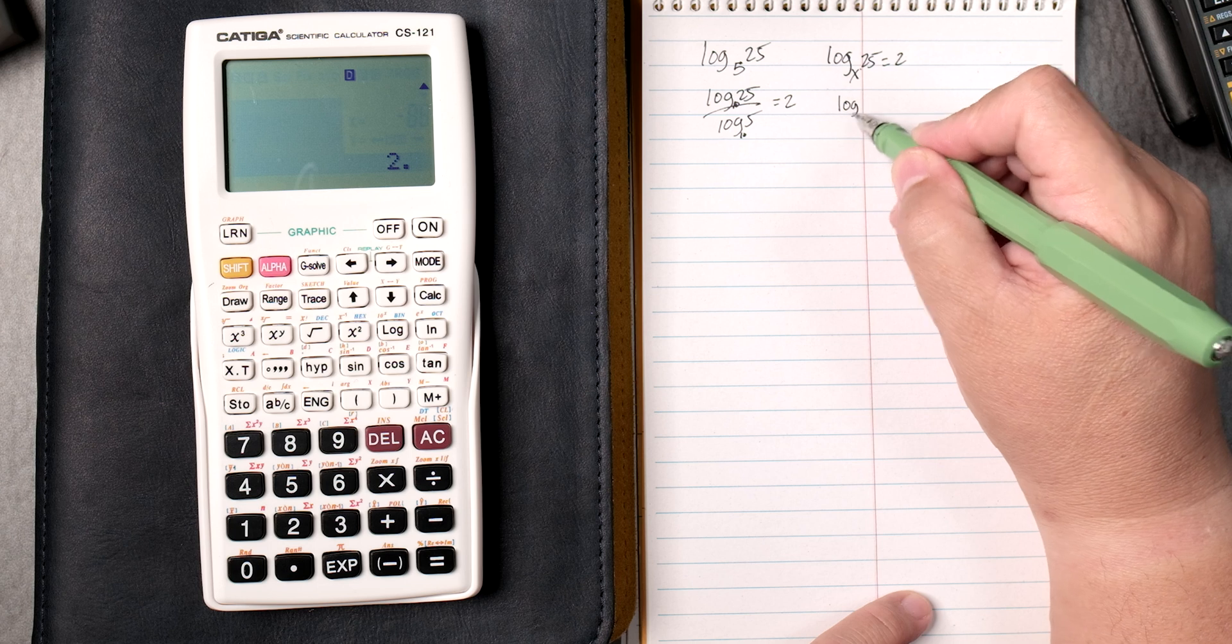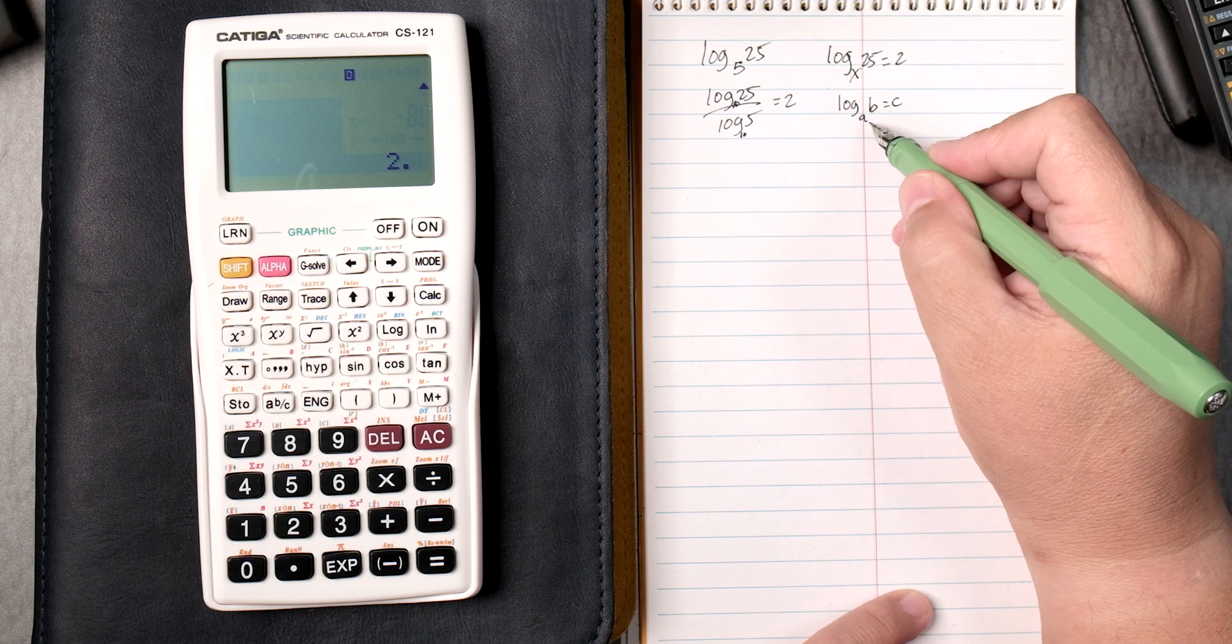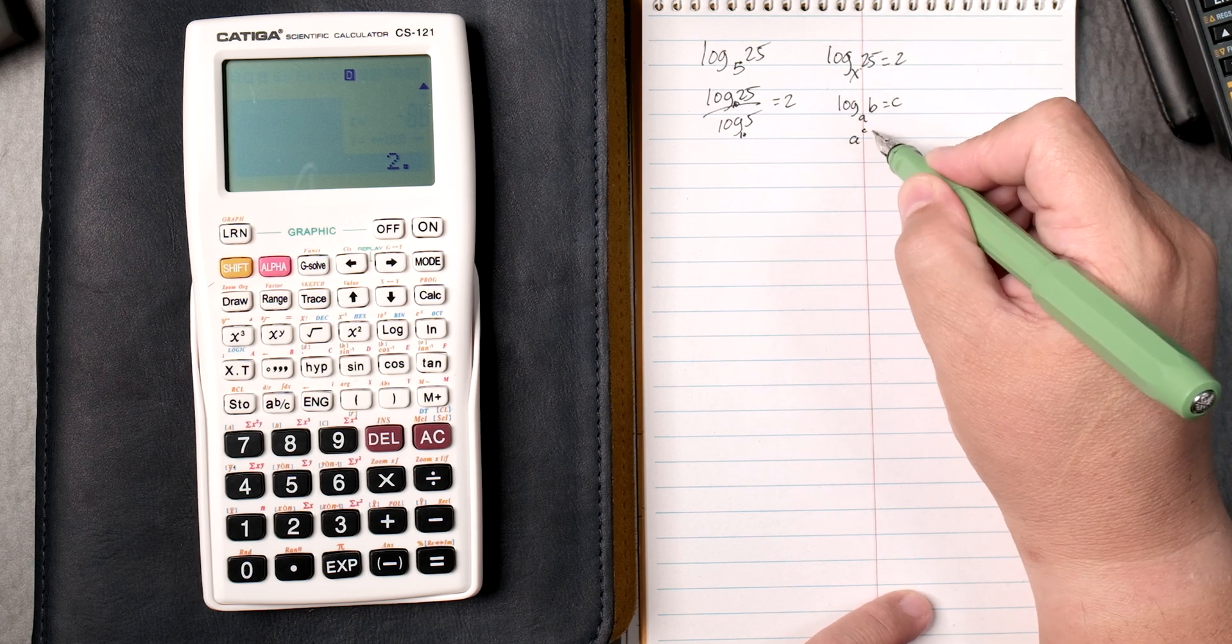Okay, then log of base x of 25 equals 2. There's a rule that says that the log of base a of b equals c can be converted to a to the c equals b. Very important rule to remember.